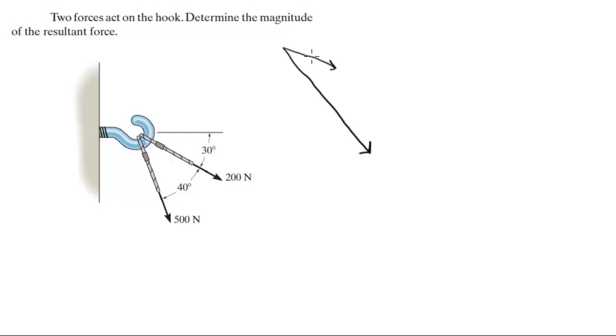So what we're gonna do is we're gonna redraw this 200N force right here. And then we're gonna draw the resultant force right there. And as you can see we have a triangle.